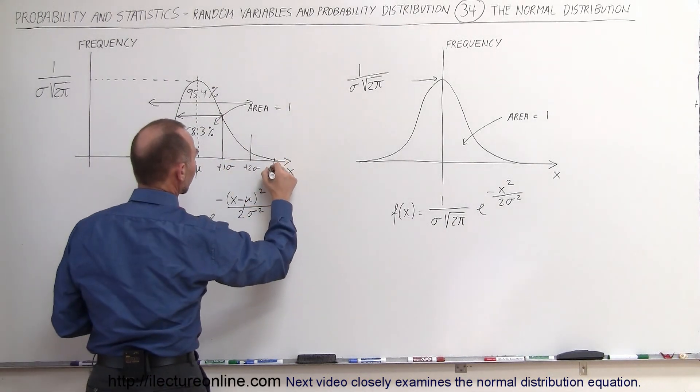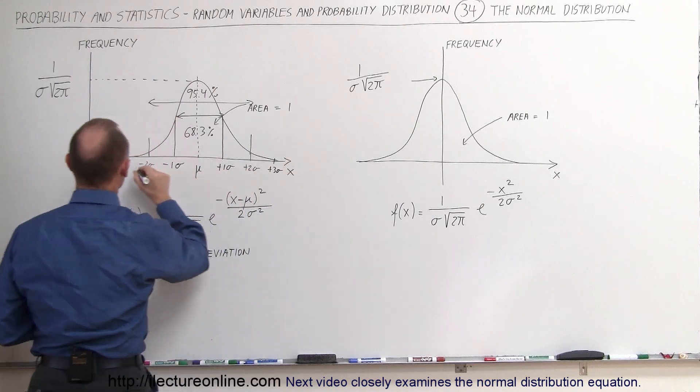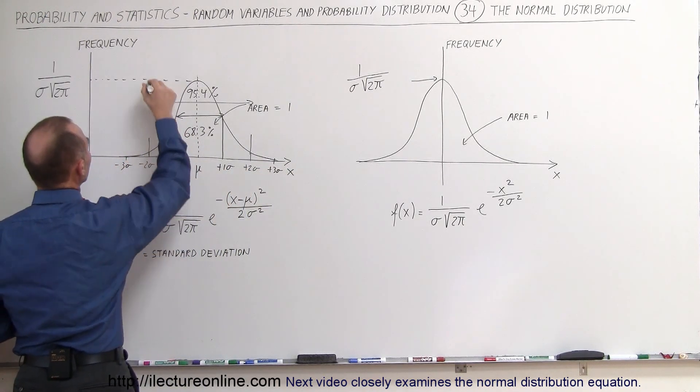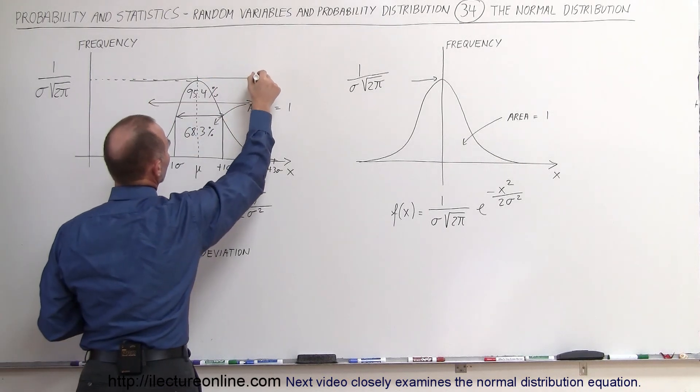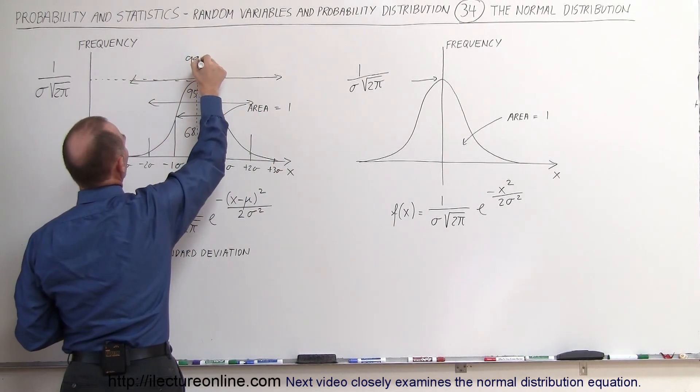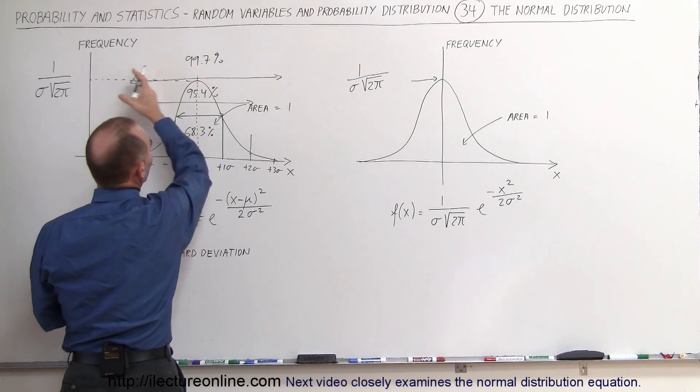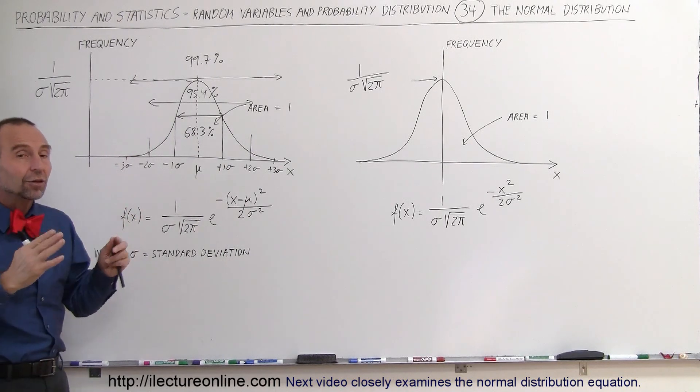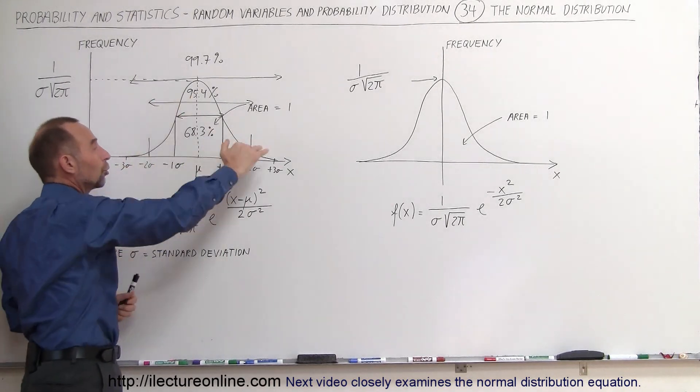And if you go all the way out to 3 sigma, plus 3 sigma here, and minus 3 sigma right here, then we know that all the values underneath our curve, about 99.7% of all the values fall between plus or minus 3 sigma. Again, if the distribution of the values is according to this normal curve.